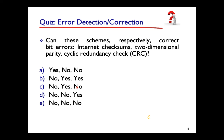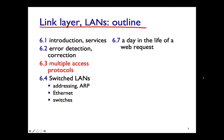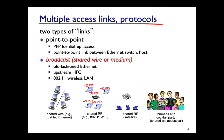That concludes error detection and correction. The next topic is medium access control — how a medium can be accessed by many different devices connected to the same wire or wireless medium, and how a link can be shared by multiple stations simultaneously.